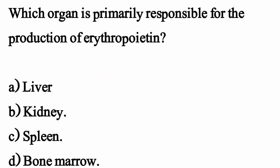Which organ is primarily responsible for the production of erythropoietin? The correct option is Option B: Kidney.